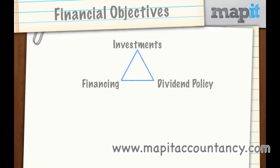There are lots of businesses that don't pay out a dividend because they need to reinvest the money they've made back into investments to make more profit. So there's a linkage between all of this, often talked about as a triangle. You can't have investments without financing; if you pay out the dividend you'll have to raise finance; if you keep the dividends, you can reinvest them in the business.